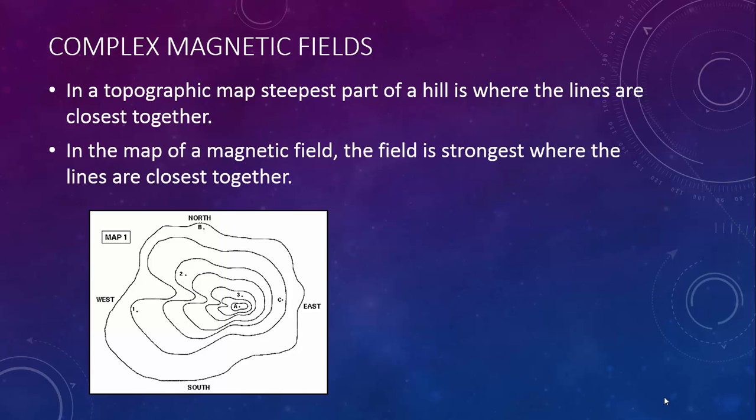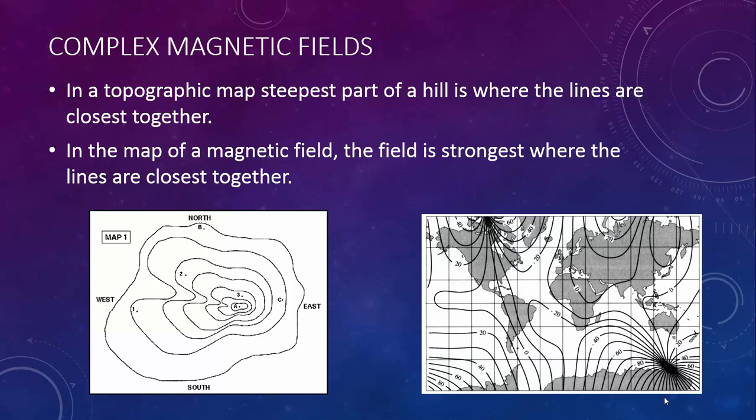In the map of a magnetic field, the field is strongest where the lines are closest together. In this map of the earth's magnetic field, you can see the lines all converge up in Canada and down near Antarctica. Those two points are the north and south magnetic poles of the earth, and that's where the magnetic field of the earth is the strongest.